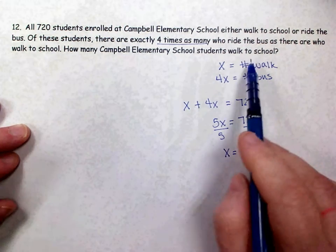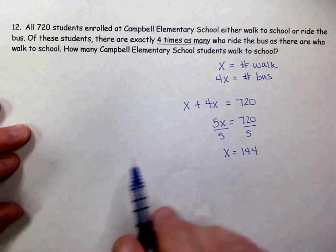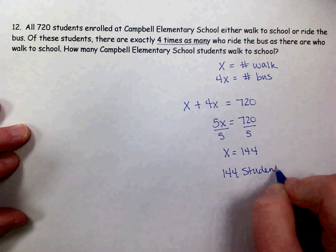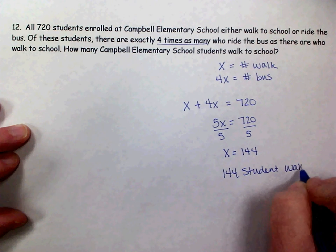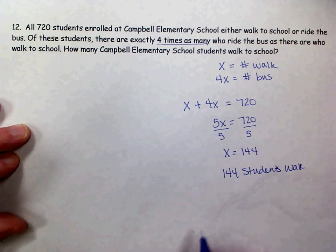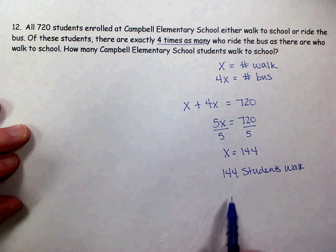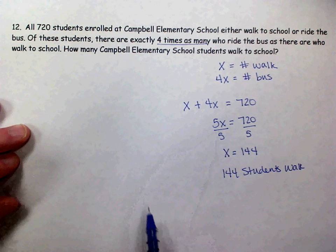It asked how many walk, and that's what my x represented. So 144 students walk. If it wanted to know how many ride the bus, then I would just multiply that by four, and that would tell me how many ride the bus, and those two numbers would have to add up to get 720.